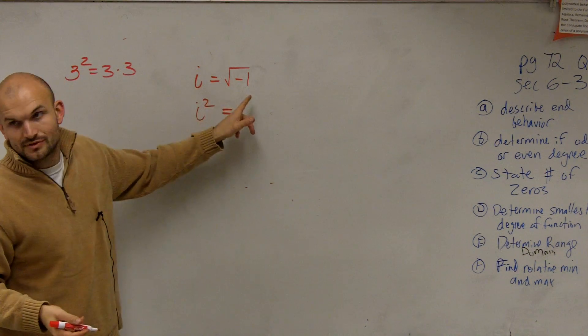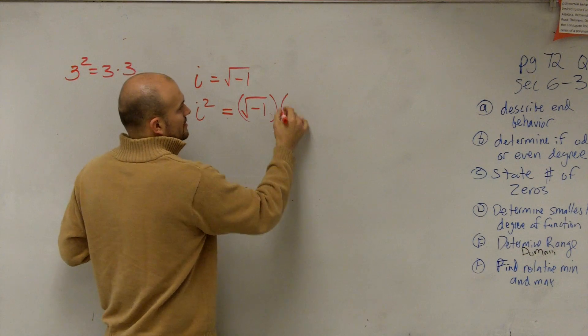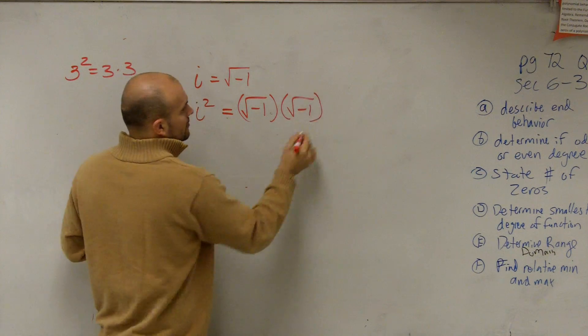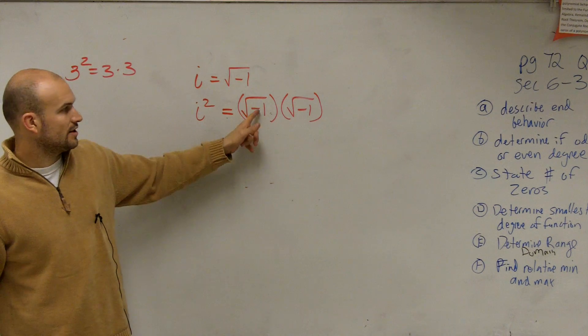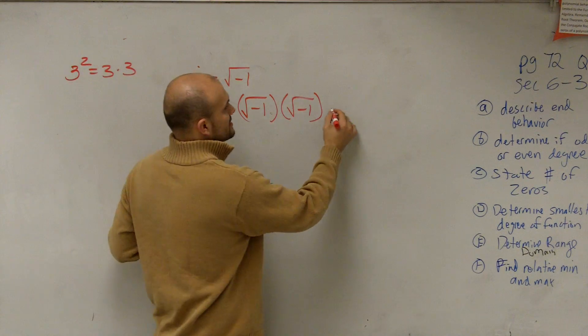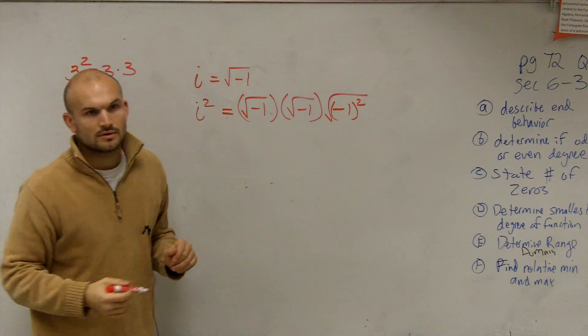So if I say i is equal to this, that means that's the square root of negative 1 times the square root of negative 1, correct? And the square root of negative 1 times the square root of negative 1 is negative 1 squared square root, right?